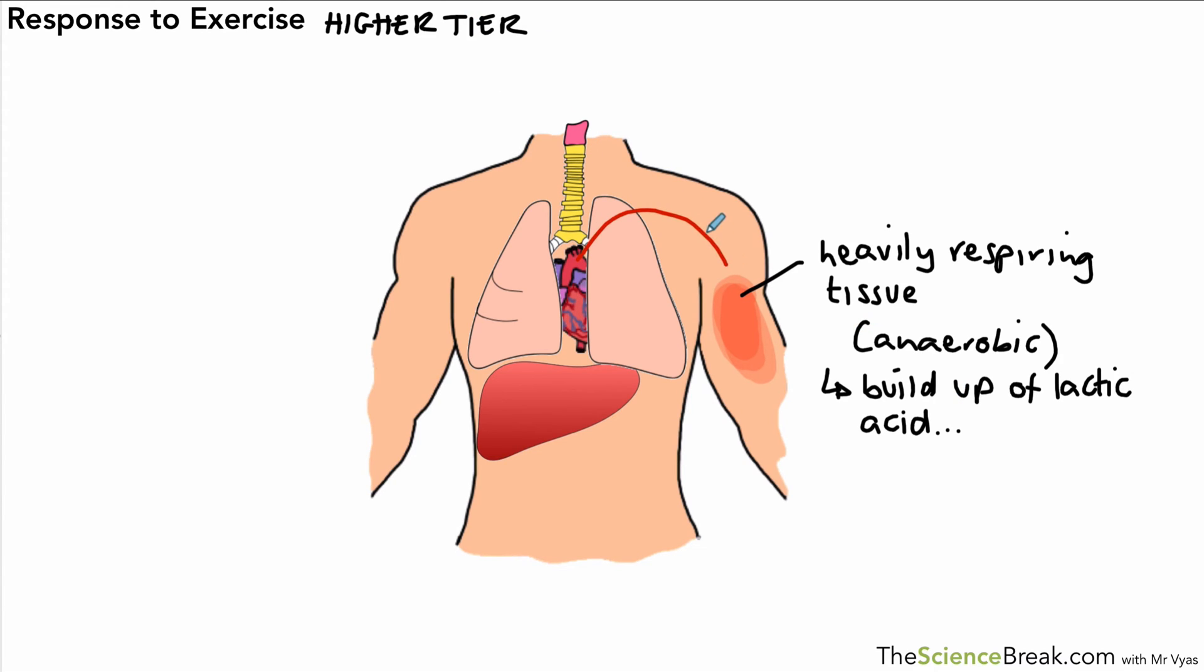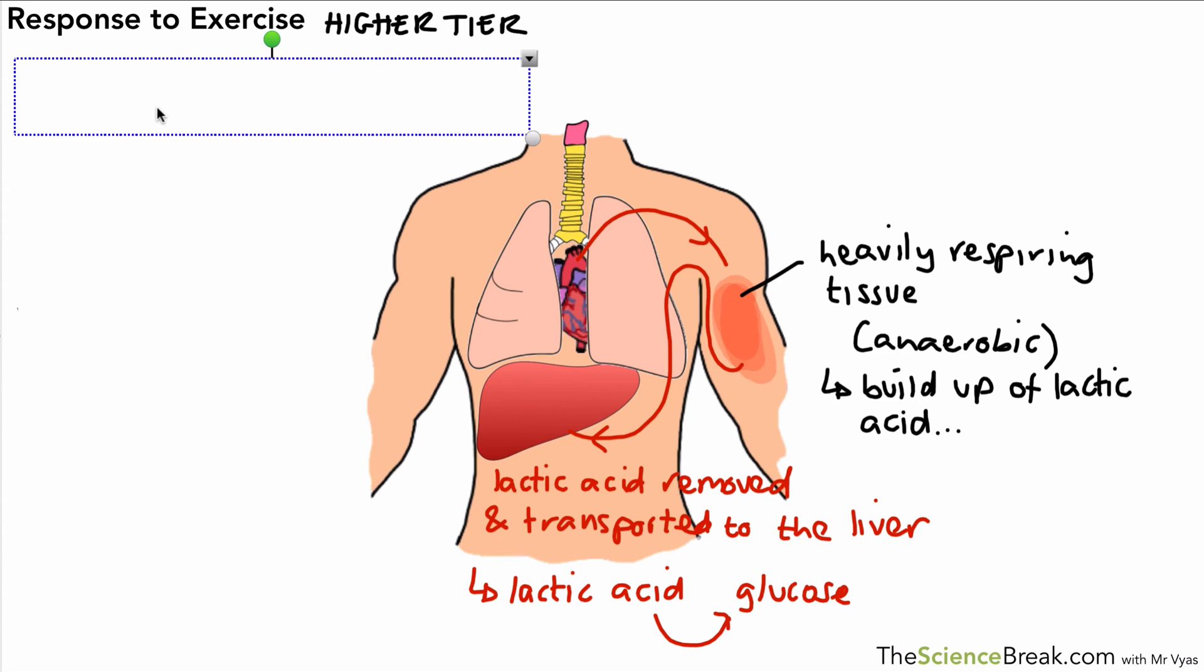So what happens is the heart pumps the blood. The blood travels to that respiring tissue and carries away that lactic acid. Lactic acid is removed and transported to the liver. Once it gets to the liver, that lactic acid is then converted back into glucose, and that glucose can then go through the process of aerobic respiration.